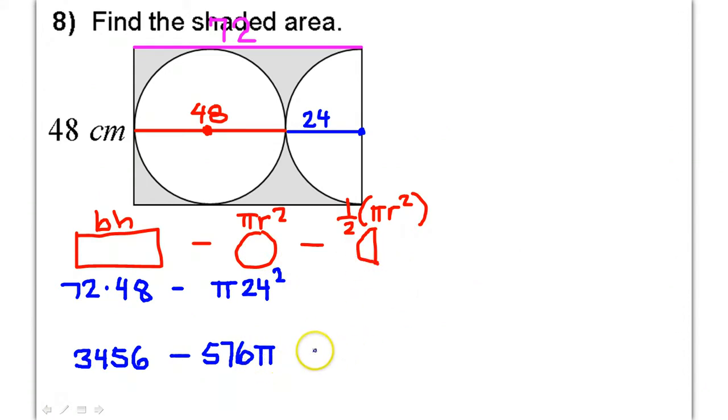Now, we're supposed to subtract half a circle. Well, let's just take our 576 and divide that by 2. That gives us 288. All right, still got the pi on it, though. So, minus 288 pi.